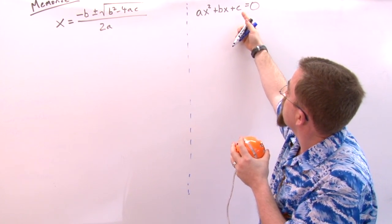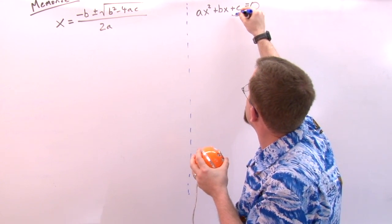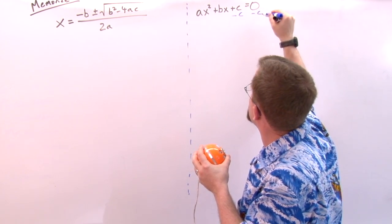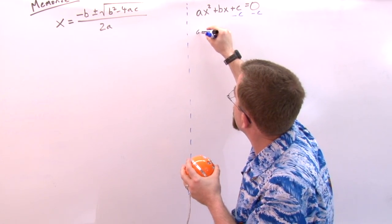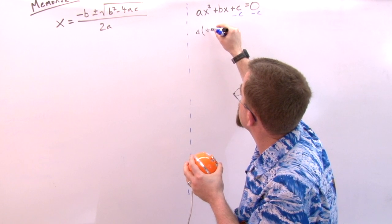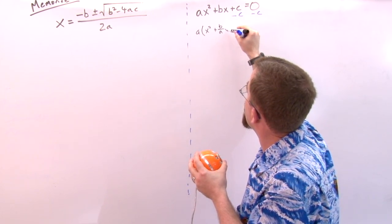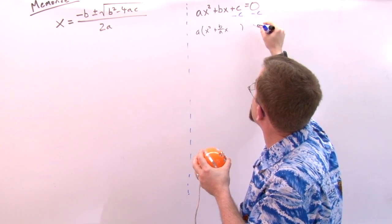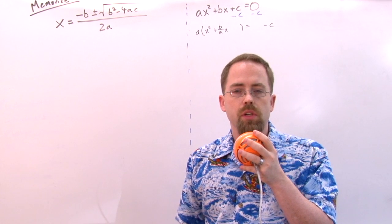I'm going to move the c to the other side by subtraction and factor this a out. So if I factor this a out, I'm left with x² + (b/a)x = -c.